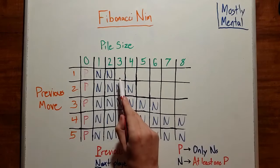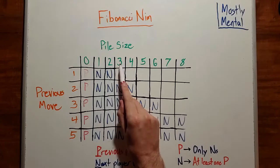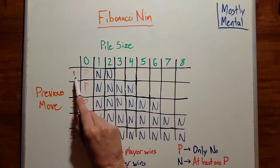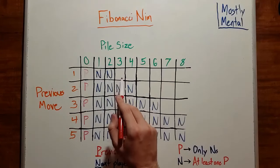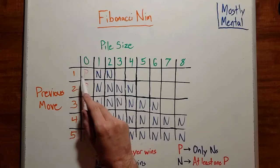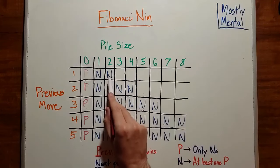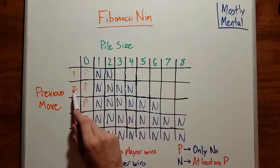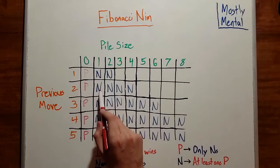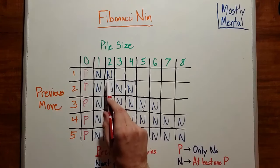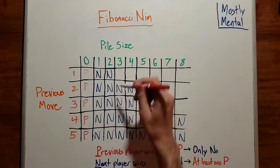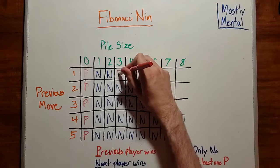So for instance, from this position where the pile size is 3 and the previous move is 1, the player can remove 1 and end up with a pile size of 2, or remove 2 and end up with a pile size of 1. Both of those are N positions, so this must be a P position.